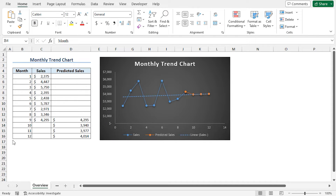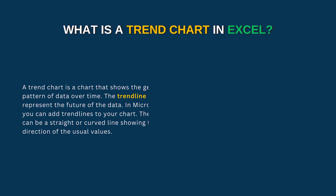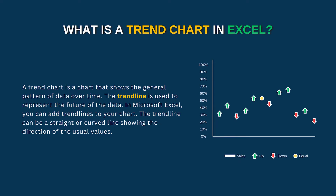For this video, I will use Microsoft Excel 365. A trend chart is a chart that shows the general pattern of the data over time. You can add a trend line to your chart. This trend line can be a straight or curved line showing the direction of the usual values that will help you predict the future of the data.